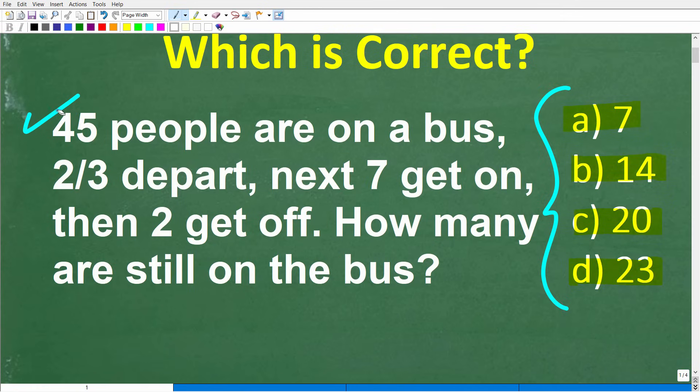All right, so here is our problem. I'll read it one more time. So 45 people are on a bus. Then two-thirds of those people depart. Now after that, seven people get on the bus, and then after that, two people get off the bus. So how many people are still on the bus after all this activity?